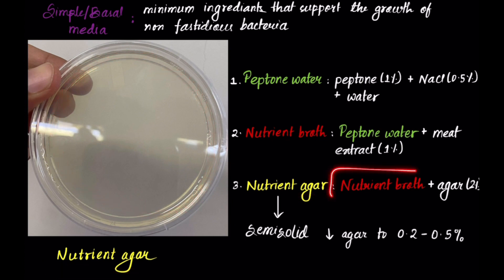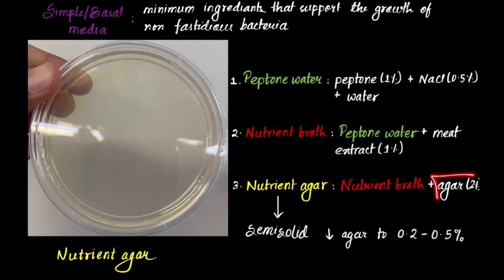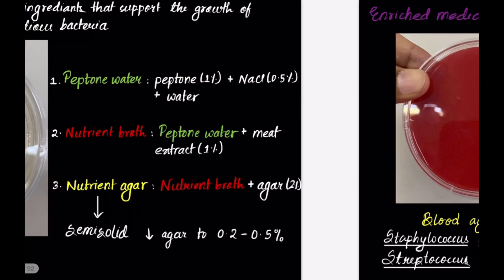Nutrient agar is composed of nutrient broth plus agar, which is used to make the medium solid. Agar is a hydrocolloid.